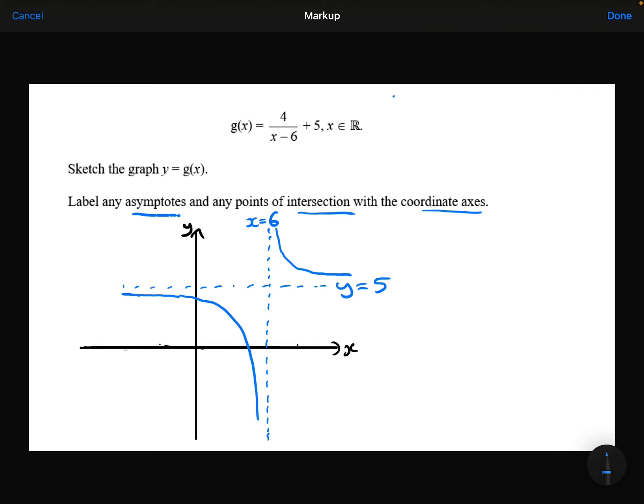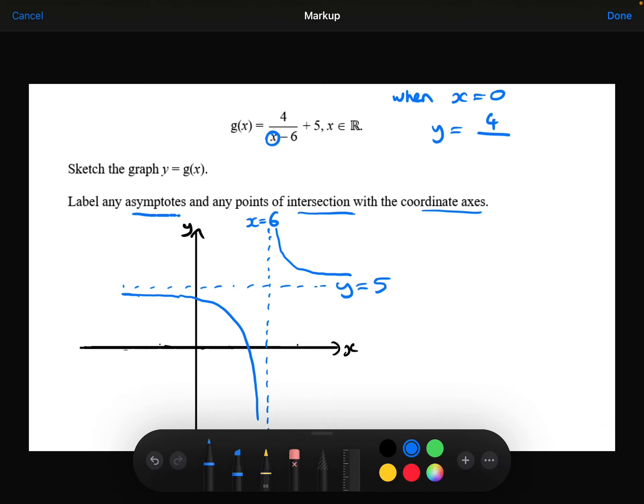Let's do the y-intercept first. When x equals 0, y is equal to 4 divided by 0 minus 6, which is obviously just minus 6, plus the 5, which gives 13 over 3. So that's my y-intercept.